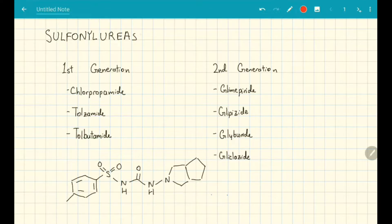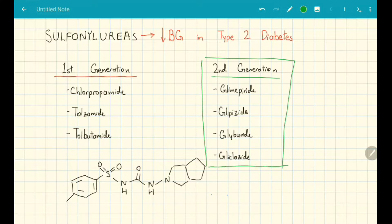Sulfonylureas are a class of medications commonly used to lower blood glucose in type 2 diabetes. The first generation sulfonylureas are rarely used anymore, largely being replaced by the second generation, since the second generation sulfonylureas are much more potent with less side effects.